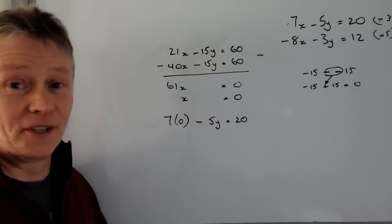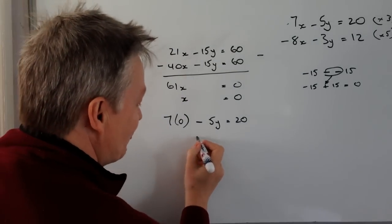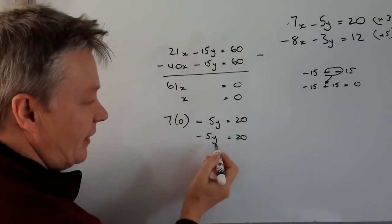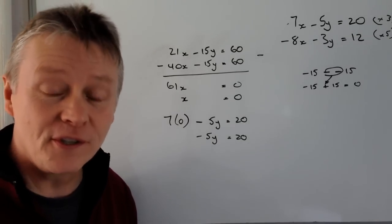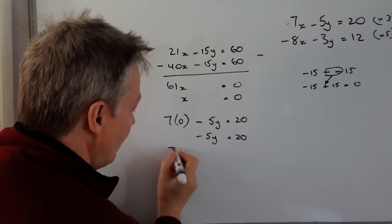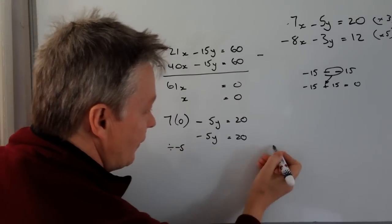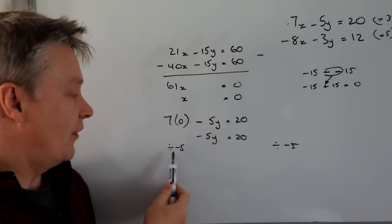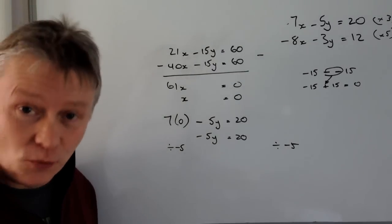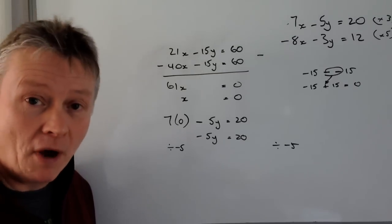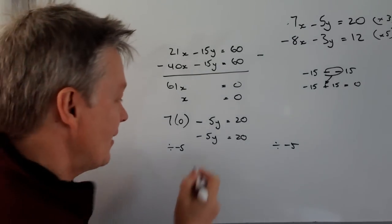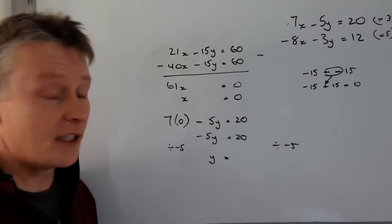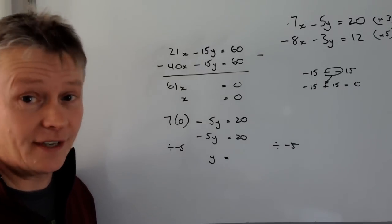So seven lots of zero is still zero. So I'm now left with minus 5y equals 20. And then I need to find out y on its own. So what I'm going to do is divide through by minus 5. If I divide by minus 5, it means on this side I get minus 5 divided by minus 5 is just 1 because a minus divided by minus is a positive. So that leaves me with y. And here I've got 20 divided by minus 5. It's positive divided by negative is a negative. So 20 divided by minus 5 is minus 4.